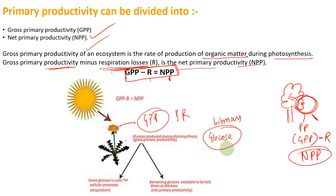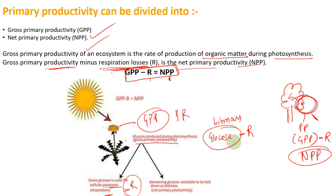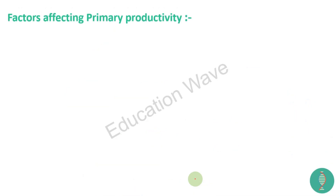Maan lijiye ki glucose hi usne banaya - woh hamaara gross primary productivity ho gaya. Lekin kuch glucose usne cellular processes mein use kar liya, matlab respiration vagaira aisi chezon mein usne khud use kar liya. To us respiration ko minus karke - is glucose ki jo total primary productivity thi usme se jab hum minus karte hain - to jo remaining glucose hamare paas available tha woh tha hamaara net primary productivity. So this was net primary productivity and gross primary productivity.